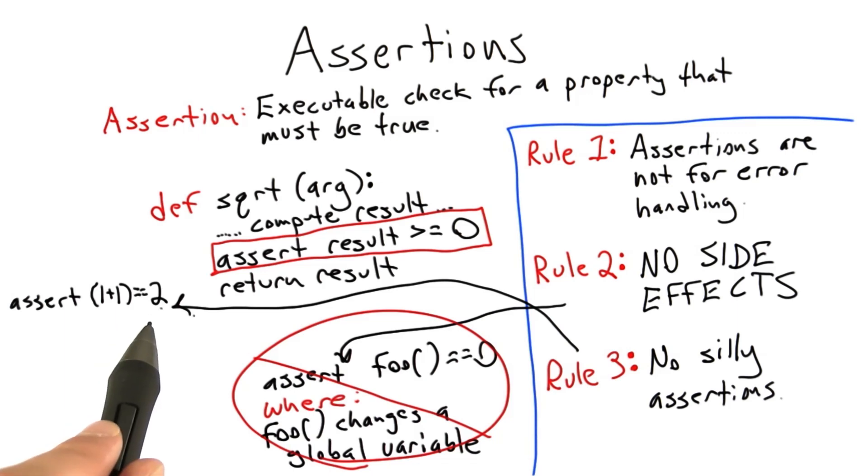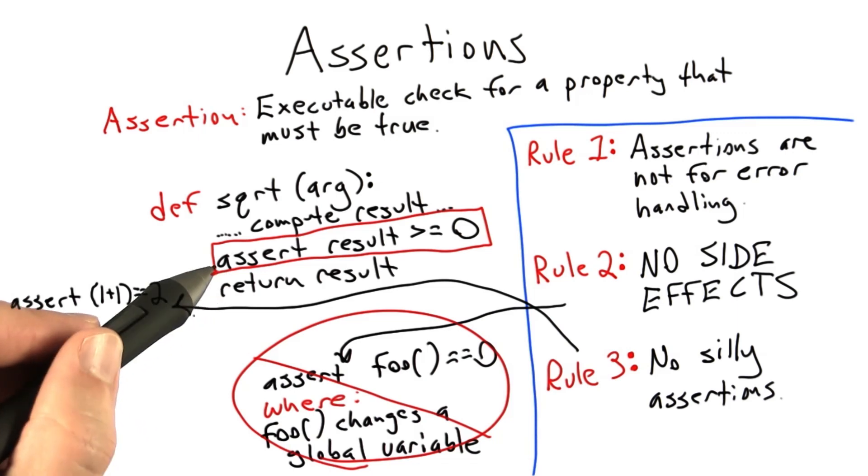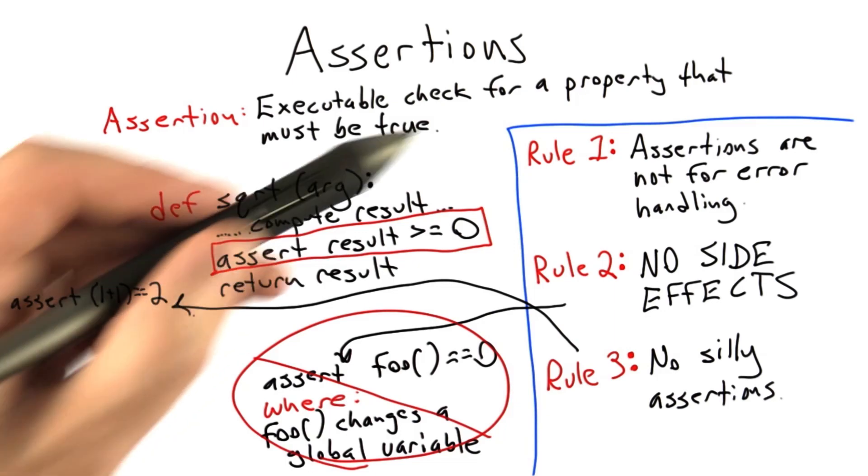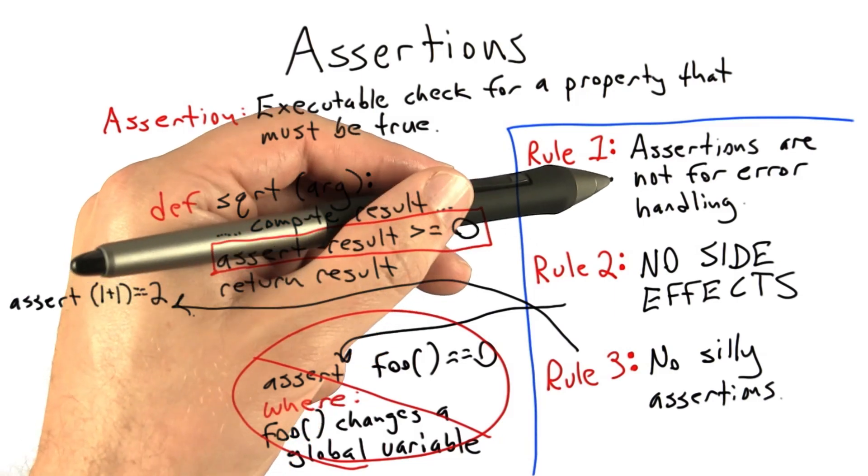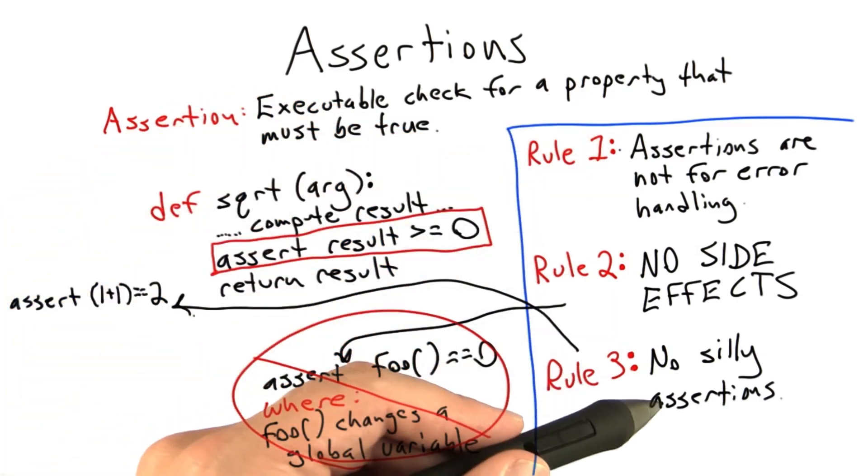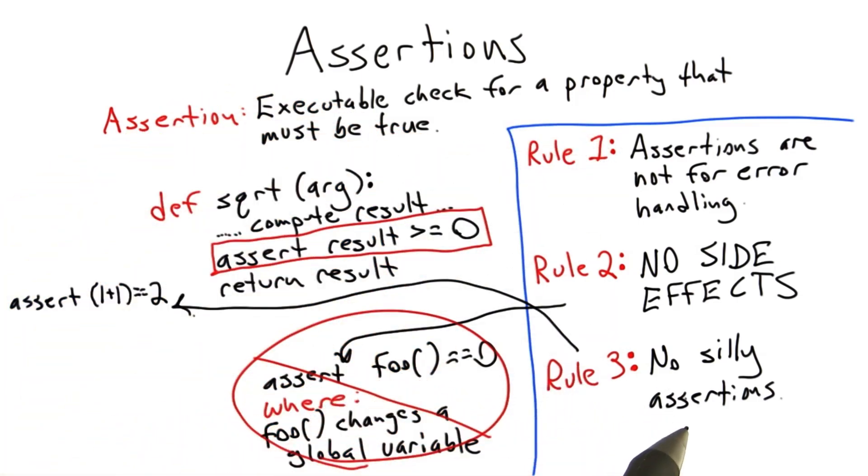The best assertions are those which check a non-trivial property that could be wrong, but only if we actually made a mistake in our logic. So, it's not something that could be wrong if the user did something wrong, and it's not something that's wrong that's just completely silly to check. So now I'm going to let you guys write some assertions.